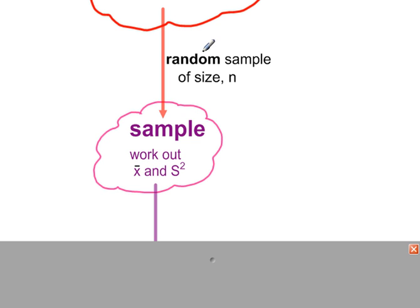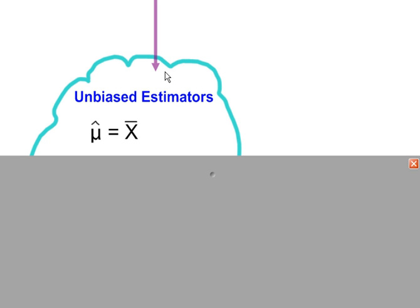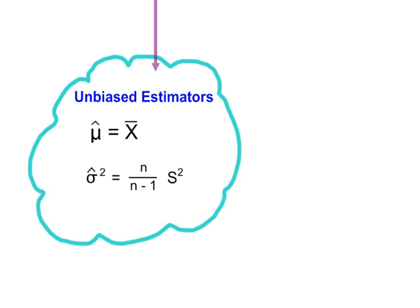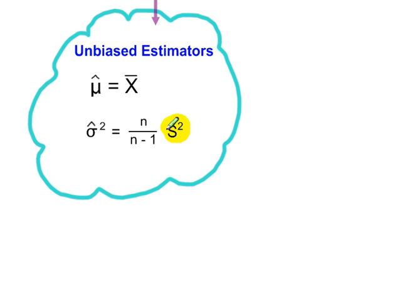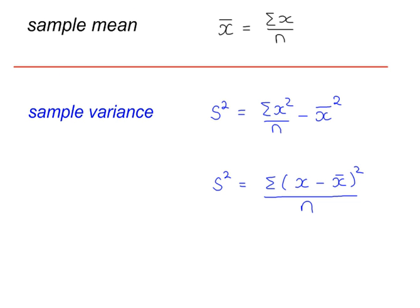From our random sample we work out the sample mean and the sample variance. We can use the sample mean as an unbiased estimator of the population mean — the little hat represents an estimator. However, the sample variance has to be multiplied by n over n-1 to get an unbiased estimate of the population variance. The formula for the sample variance is shown here.